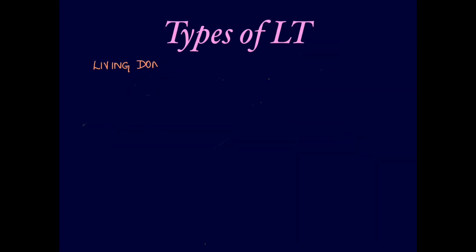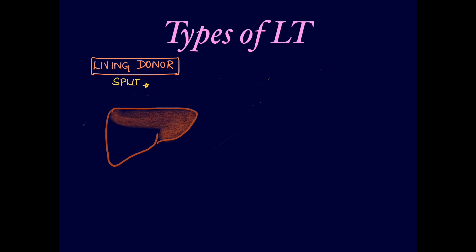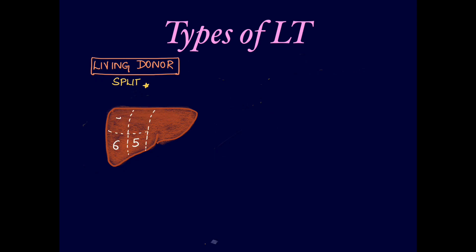Coming to types of liver transplantation: if the donor is living, we can do split liver transplantation since one liver can be used for multiple patients. Split liver transplantation is usually preferred. In right lobe transplantation, segments 5, 6, 7, and 8 are used.